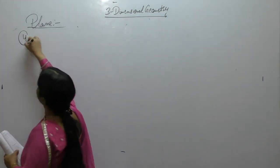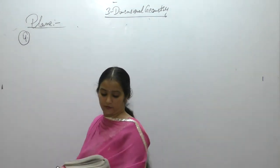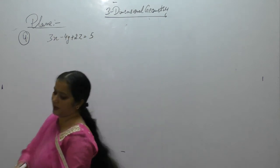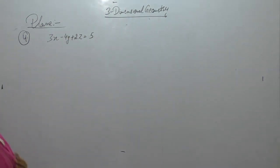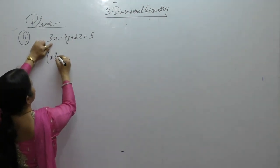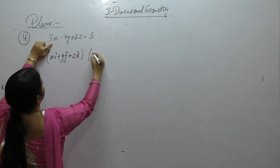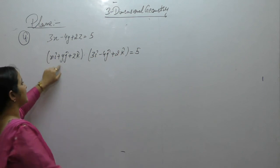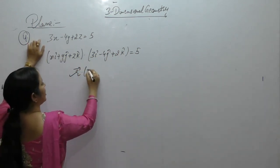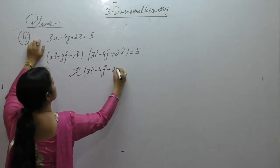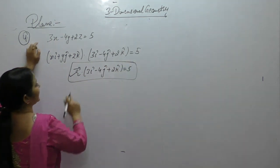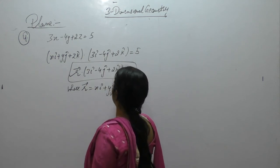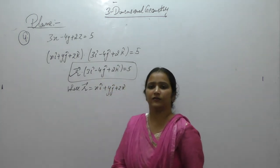Find the vector equation of the plane whose Cartesian equation is 3x − 4y + 2z = 5. We can write this as (xi + yj + zk)·(3i − 4j + 2k) = 5, so the vector equation is R·(3i − 4j + 2k) = 5, where R = xi + yj + zk.